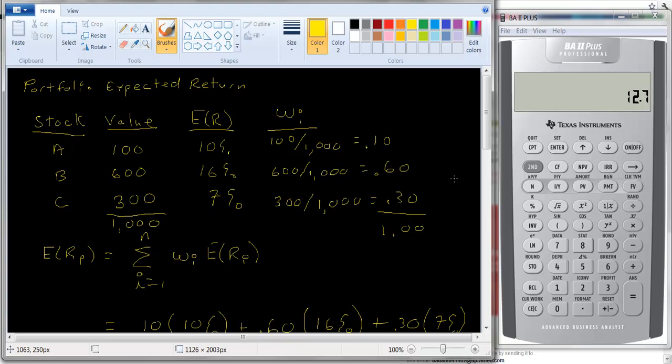And again always ask yourself does my answer seem reasonable. Now sometimes we'll do calculations that don't seem correct intuitively. But most of the time they will. And if you get something that's ridiculous like an expected return that's less than 7% or greater than 16% you did something wrong.